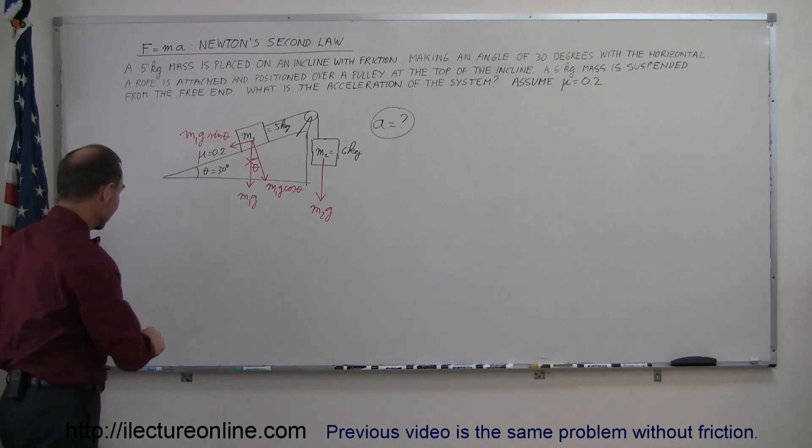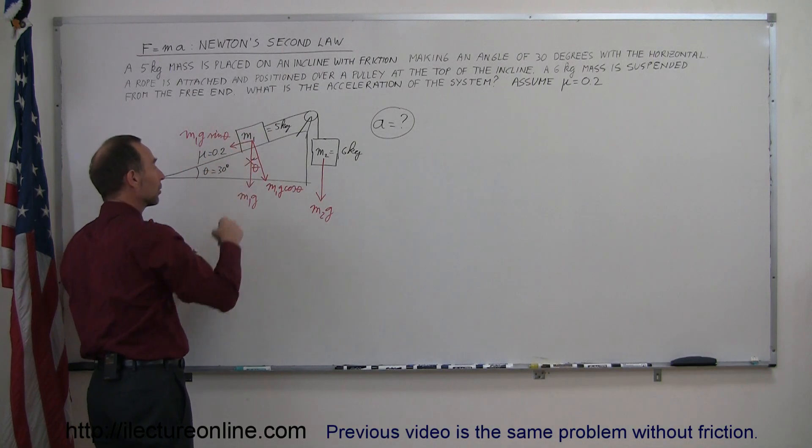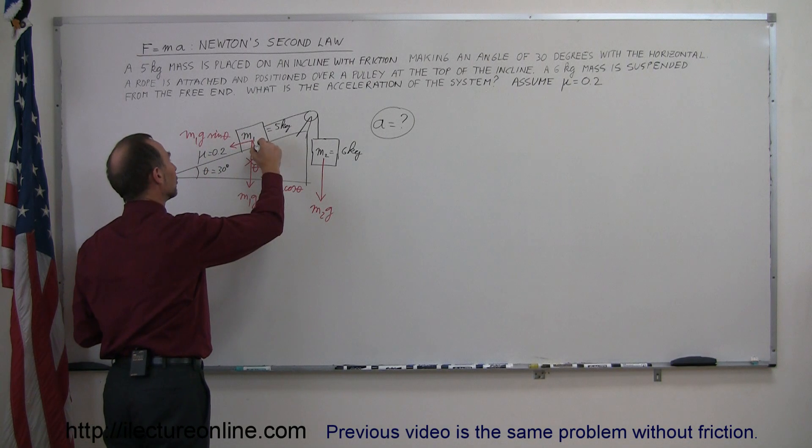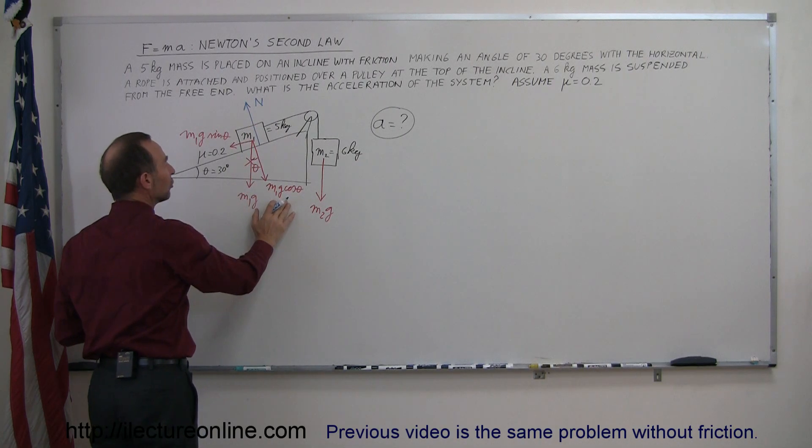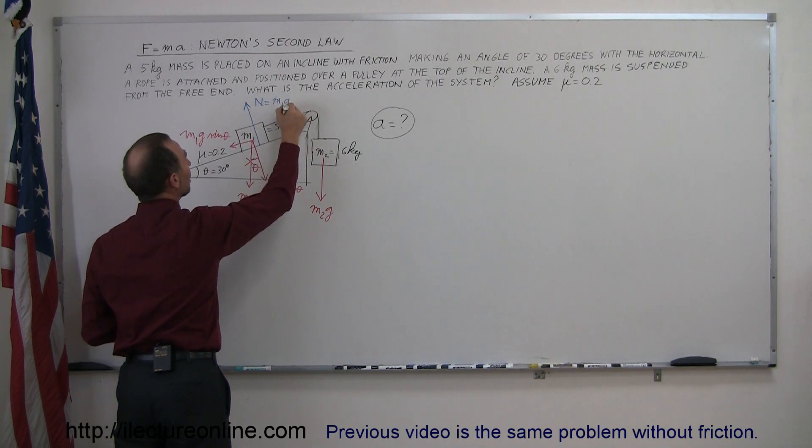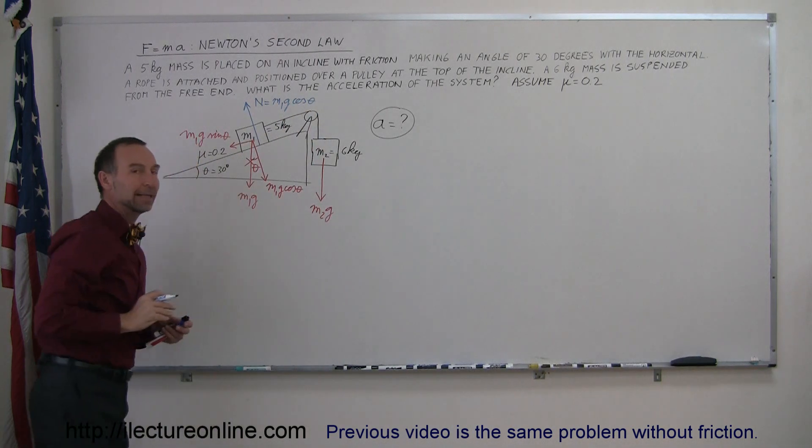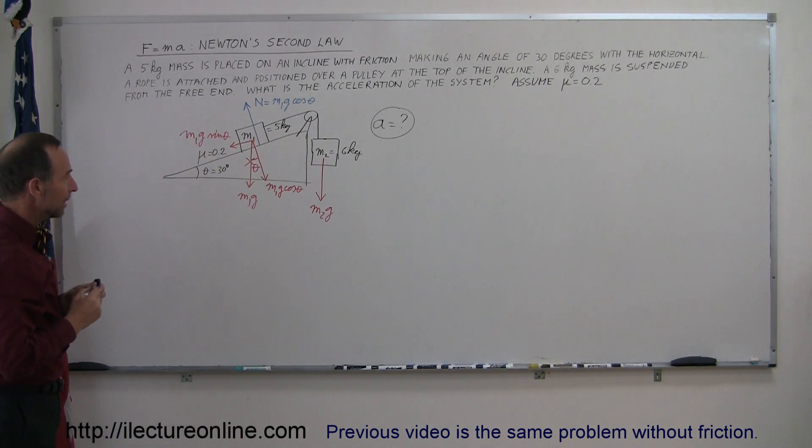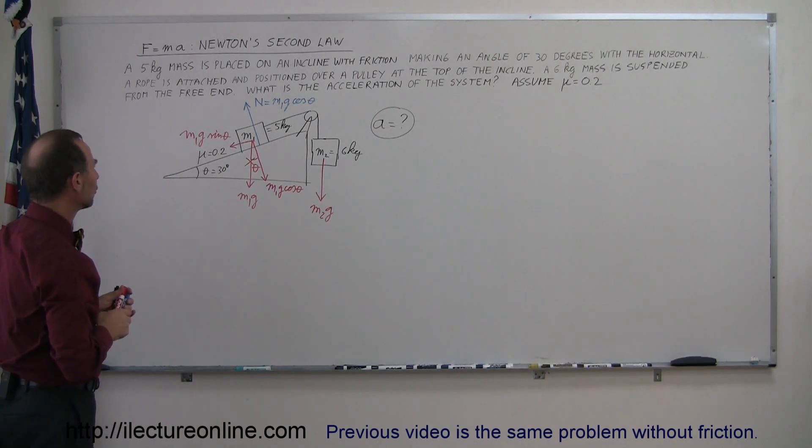We then also realize that the incline pushes back against the force perpendicular to the incline, m1g cosine theta, which is the normal force. Normal force which is equal magnitude but opposite direction to the m1g cosine theta. So this is equal to m1g cosine theta, that's the magnitude, in the opposite direction. And then we have one more force to worry about, which is the force due to the friction between m1 and the surface.